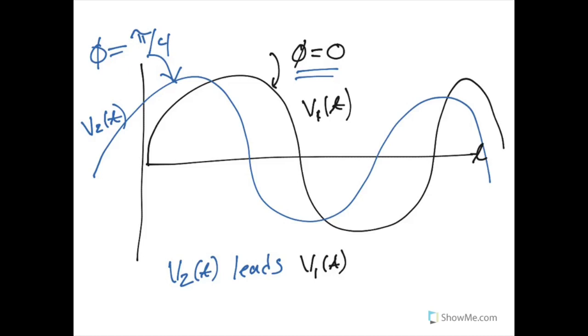then what we would say here is that V2 leads V1 in terms of time. So phase angle is relative between two different waves. V2 here, the blue wave, is in front of V1 in terms of time because it occurs earlier in time.